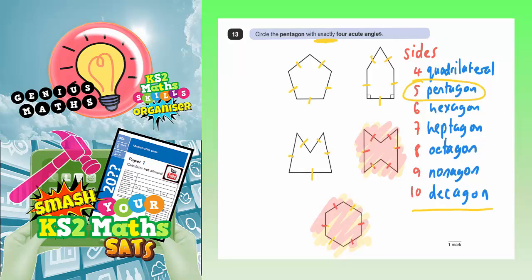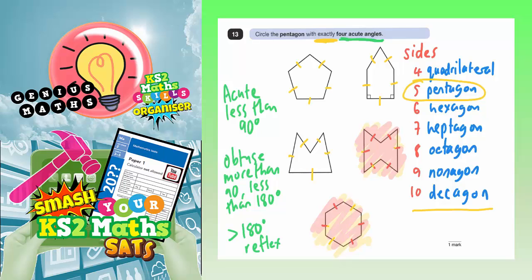Now we turn our attention to what it says about the angles. We've got to have exactly four acute angles. Remember that acute means it's less than 90 degrees. Obtuse is more than 90, or I suppose we should say more than 90 but less than 180 degrees, because once you get bigger than 180 degrees, that is actually called a reflex angle.